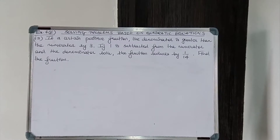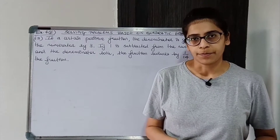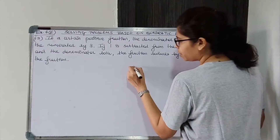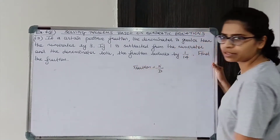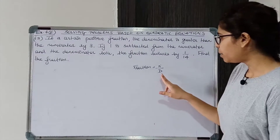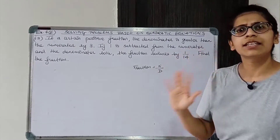In a certain positive fraction, the denominator is greater than the numerator by 3. If 1 is subtracted from the numerator and the denominator both, the fraction reduces by 1 by 14. Find the fraction. There is a positive fraction, so we will be considering positive numbers. Now firstly, what is a fraction? It is numerator upon denominator. Now denominator is greater than the numerator by 3. So let's take numerator as x.